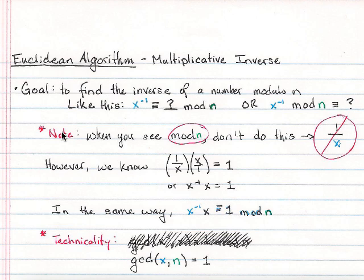So I put as a note, when you see mod n, you see mod anything, you don't want to do this and end up with a decimal. That is not good. However, we do know that if you had 1 over x times x over 1, it equals 1, which I can rewrite as x inverse times x equals 1.